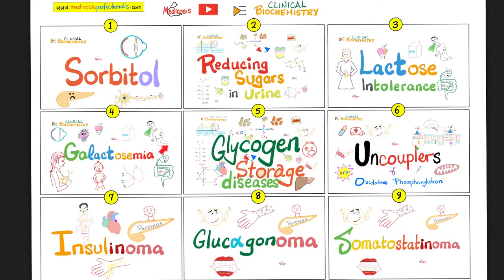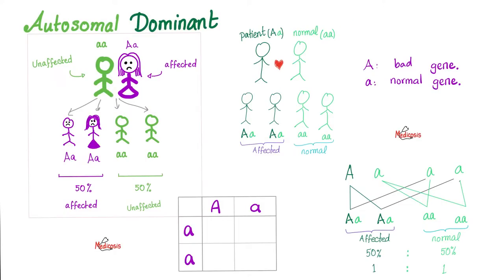Please watch the videos in this clinical biochemistry playlist in order for maximum understanding and retention. Porphyria cutanea tarda could be inherited in an autosomal dominant fashion, or could be acquired secondary to hepatitis C. What does autosomal dominant mean? It means one parent is affected, the other parent is normal, and the offspring has a 50-50 chance of being sick with this disease.